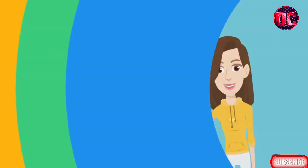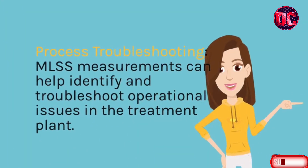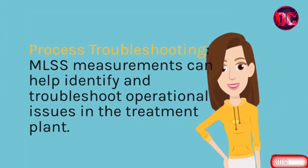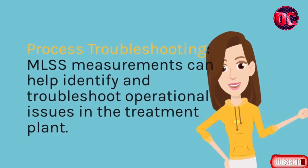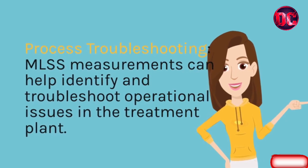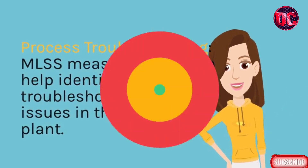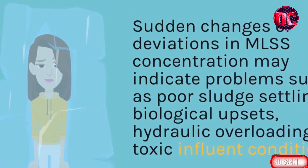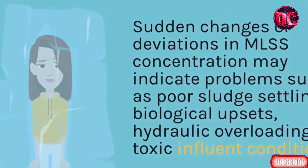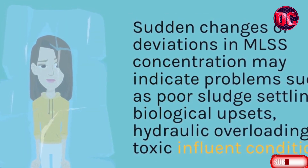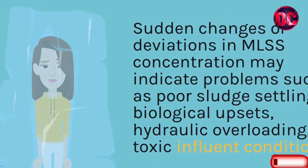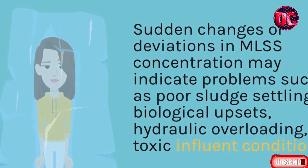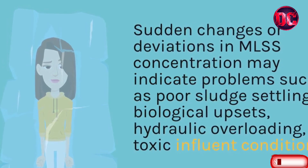MLSS measurements can help identify and troubleshoot occasional issues in the treatment plant. Sudden changes or deviations in MLSS concentration may indicate problems such as poor sludge settling, biological upsets, hydraulic overloading, or toxic influent conditions.